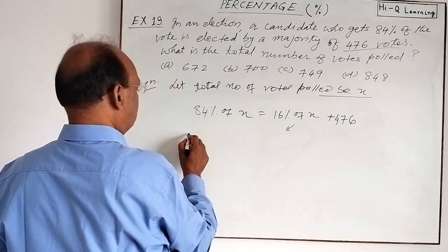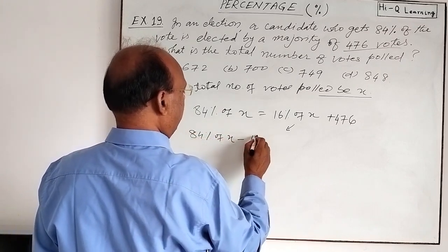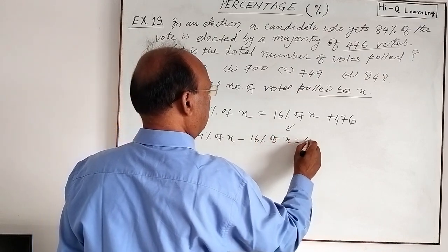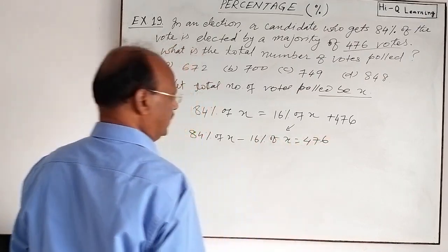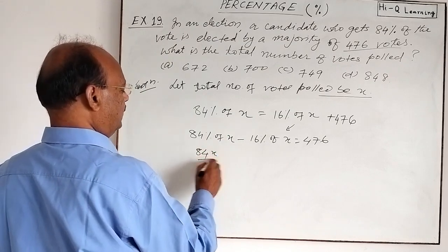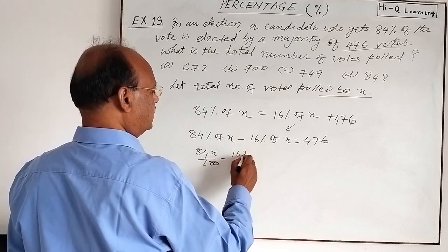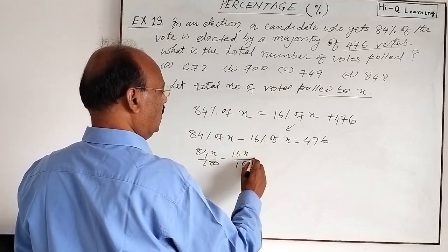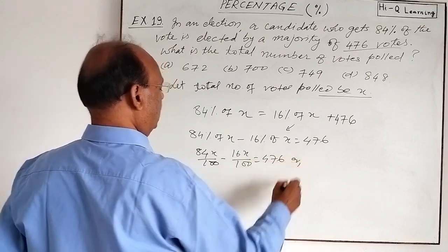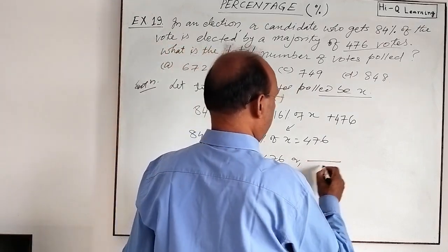So 84 percent of X minus 16 percent of X is equal to 476. That is 84X divided by 100, minus 16X divided by 100, equals 476. On the left-hand side, the LCM will be 100.